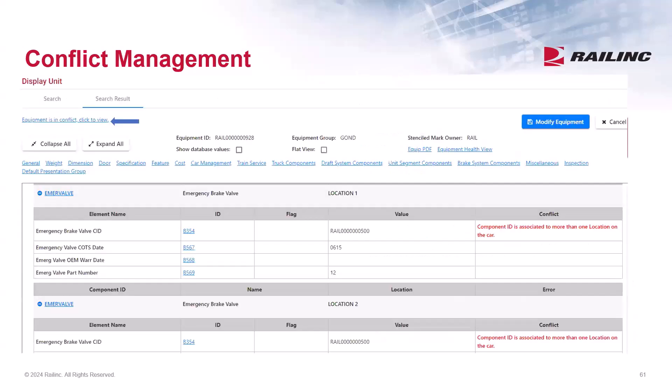In this example, I'm looking at the conflict for rail 928. I click the link that reads 'equipment is in conflict, click to view,' which will take me straight to the conflict. The conflict message reads: 'component ID is associated to more than one location on the car.' The same component ID appears in locations one and two, so the car owner can nullify whichever location is incorrect. Please note that component conflicts do not restrict the cars from moving. Most car owners may have very few conflicts, but keep in mind that Umler is updated with new business rules, permissible values, and reference file changes every quarter, so it's possible that occasionally you may have some records that result in a conflict.